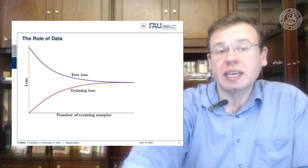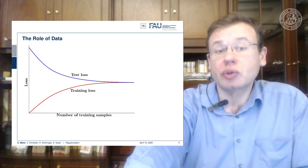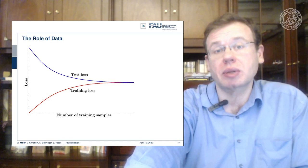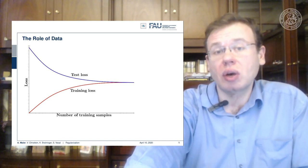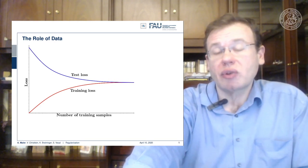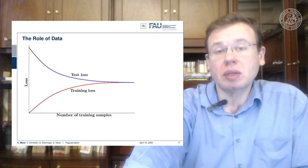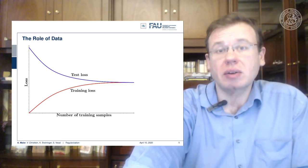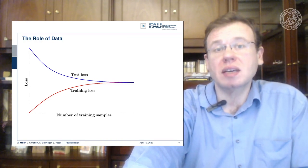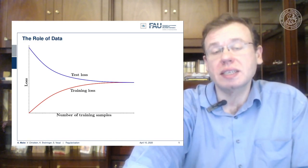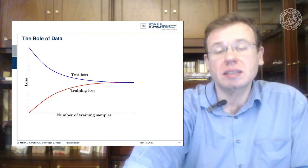Looking at the role of data: if we plot loss against the number of training samples, training loss increases with more samples — it is harder to learn a large dataset than a small one. If you have a very small dataset it may be easy to memorize entirely, but it will not be representative of your actual data of interest, causing high test loss. By increasing dataset size, training loss increases but test loss goes down — and that is what we are interested in.